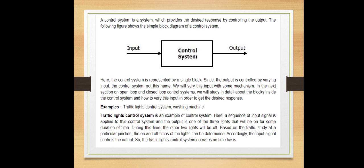A control system is a system which provides the desired response by controlling the output. As shown in the diagram, this output can be controlled and we get the desired response. Here the control system is represented by a single block. Since the output is controlled by varying input, the control system got its name.